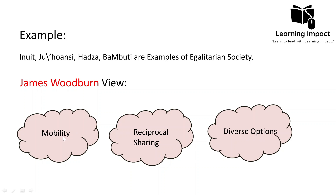The third reason was the availability of diverse options. Since these societies were mobile and nomadic, if any family tried to dominate another, the dominated people could simply move to another place. If they disagreed with their environment or if one family tried to dominate others, they would just move elsewhere. The availability of diverse options also made the society egalitarian. These were the views given by James Woodburn.